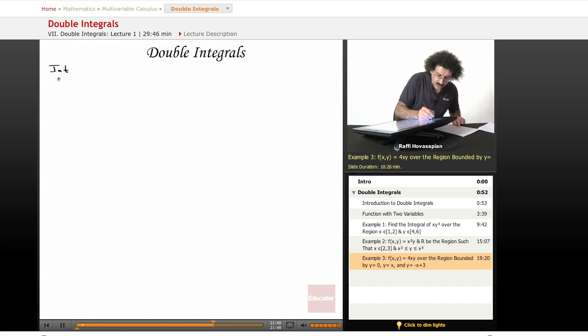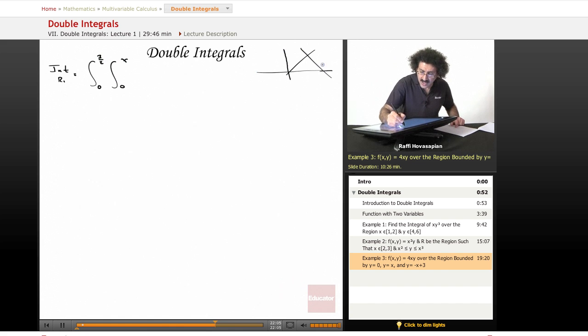So the integral over r1 is going to equal the integral from 0 to 3 halves. That's the first half. And the y value, let me draw my domain again real quickly so I have it here. It's going to be that and that. Okay, so the y value is going to go from 0 to x. And my function is 4xy dy dx.